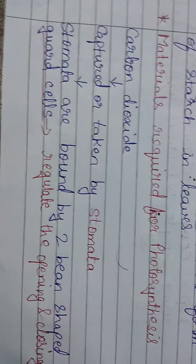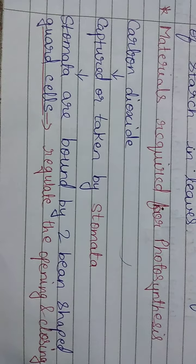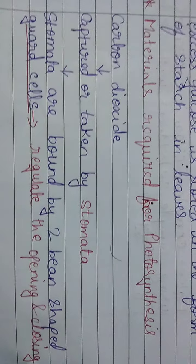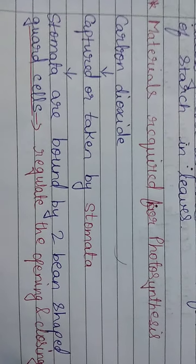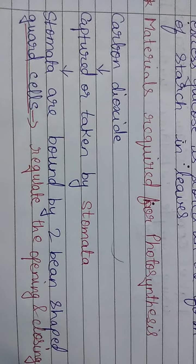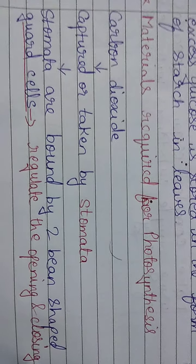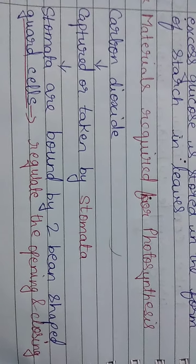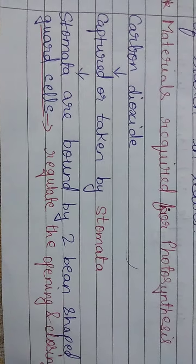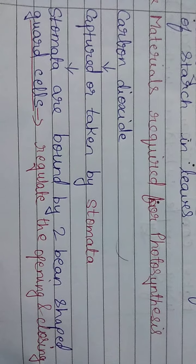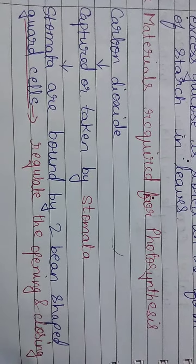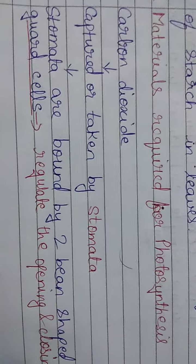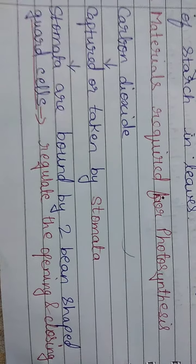After a few hours, pluck the leaves of both plants and conduct the test for starch. When we test for starch, we observe that the plant which had potassium hydroxide did not produce starch — meaning it was not able to do photosynthesis. This proves that for photosynthesis to occur, and for the production of glucose and starch to happen, carbon dioxide is required.